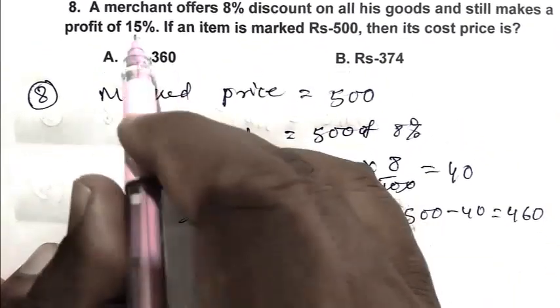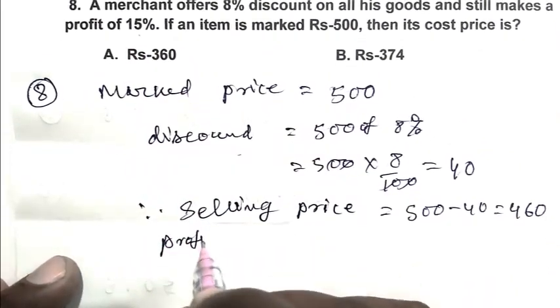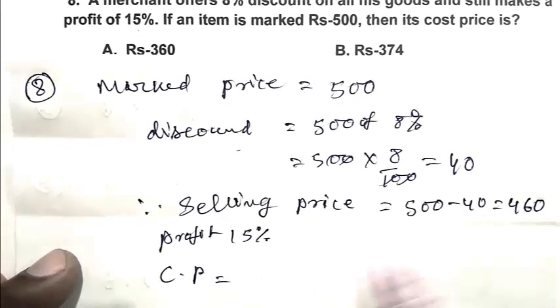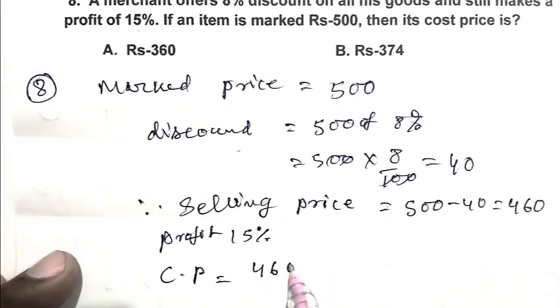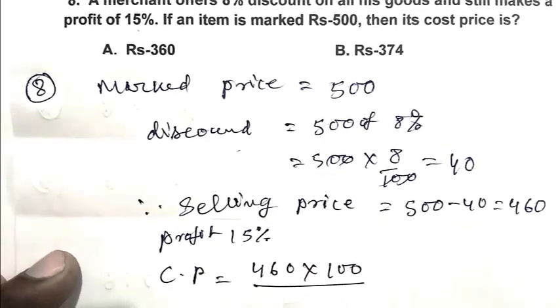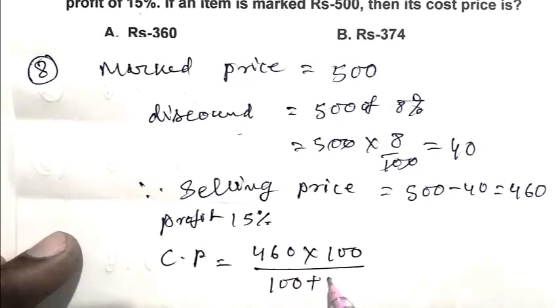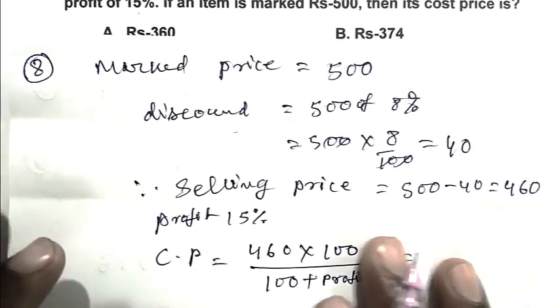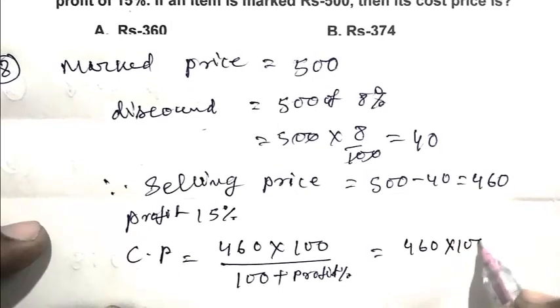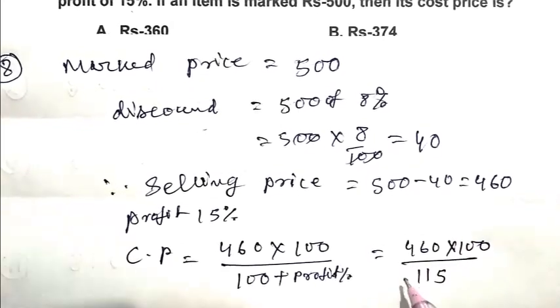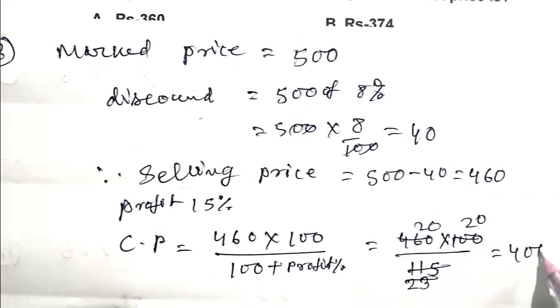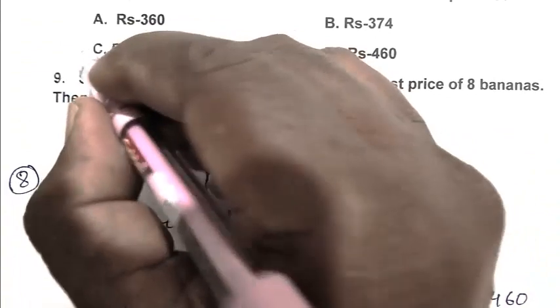He makes a profit of 15%. Therefore profit is 15%. So CP equals selling price multiplied by 100 upon (100 plus profit percentage). That is 460 multiplied by 100 by 115, which equals 400. So C is the right answer.